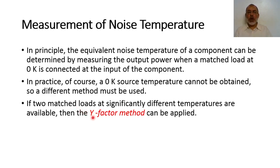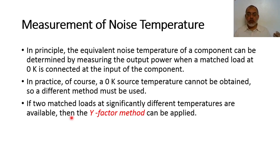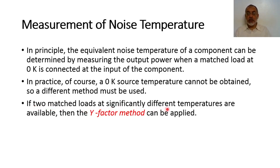This is usually called the Y method, and we are going to calculate it using the Y-factor method. If two matched loads at significantly different temperatures are available — load one at temperature T1 and load two at temperature T2 — this will introduce noise one and noise two respectively. From noise one and noise two we can obtain or calculate the effective temperature of the internal circuit.